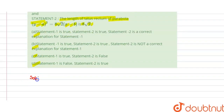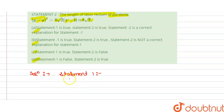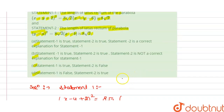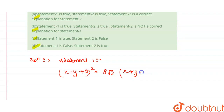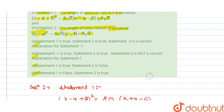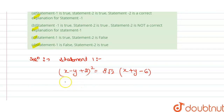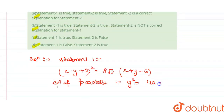The solution: Statement 1 is given to us as (x minus y plus 2) squared equals 8 root 2 times (x plus y minus 6). We know that the standard equation of a parabola is y squared equals 4a times x.